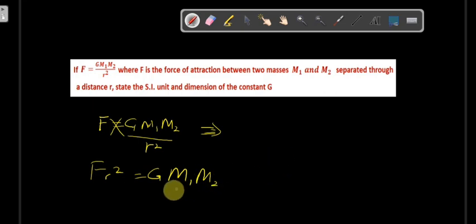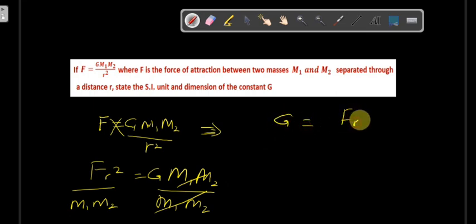Then we divide both sides by m1 m2. So G is going to be equal to F r squared over m1 m2.